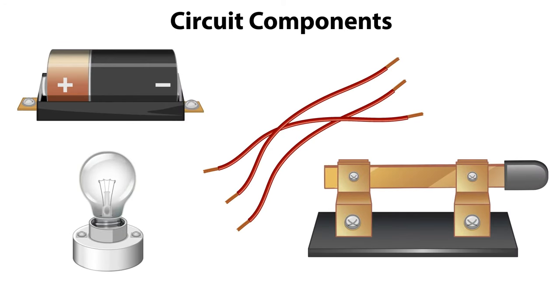A simple circuit consists of the same basic parts. It has an energy source, a battery. It has an output device, in this case a bulb.